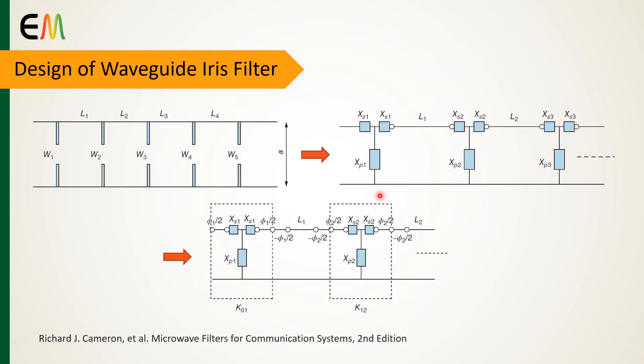The inverter is created by adding a length of φ/2 and a length of -φ/2 on each side of the discontinuity. Note that adding the length of φ/2 and -φ/2 doesn't change the original circuit.